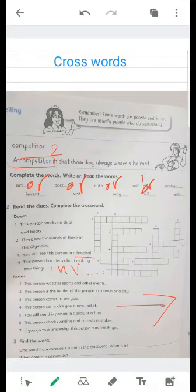Two. This person is the leader of the people in a town or a city. He is the mayor, of course. Number three. This person comes to see you. Comes to see me. Of course, he's my visitor. So we write visitor.